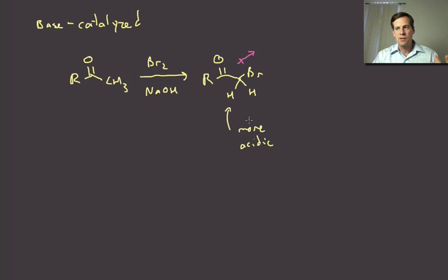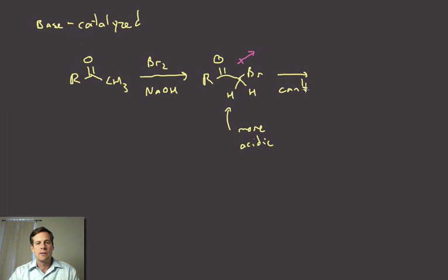So what that means is with the base catalyzed halogenation, you can't stop at a single one. And in fact, you're going to go all the way to the tri halogenated material. Okay. So this can't stop. It's a reaction with a problem. It can't stop. Okay. And so this is going to go all the way. It's going to do it twice and it'll do it three times. And so you're going to go all the way to here.